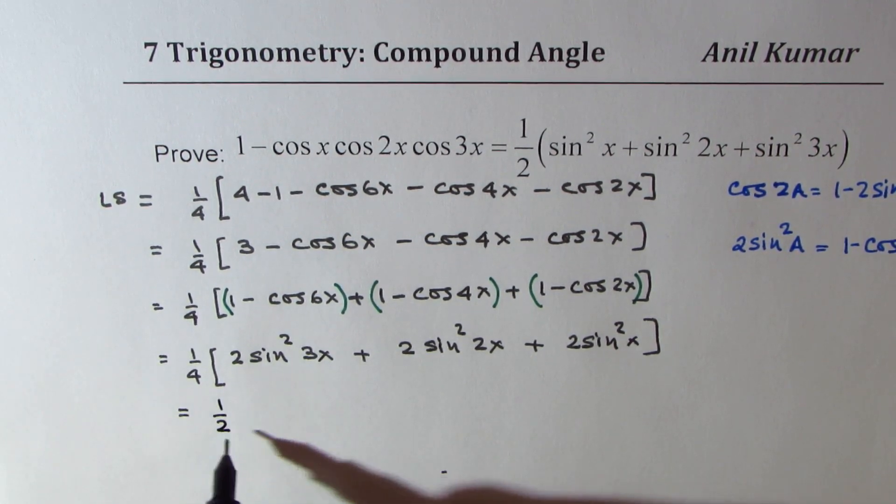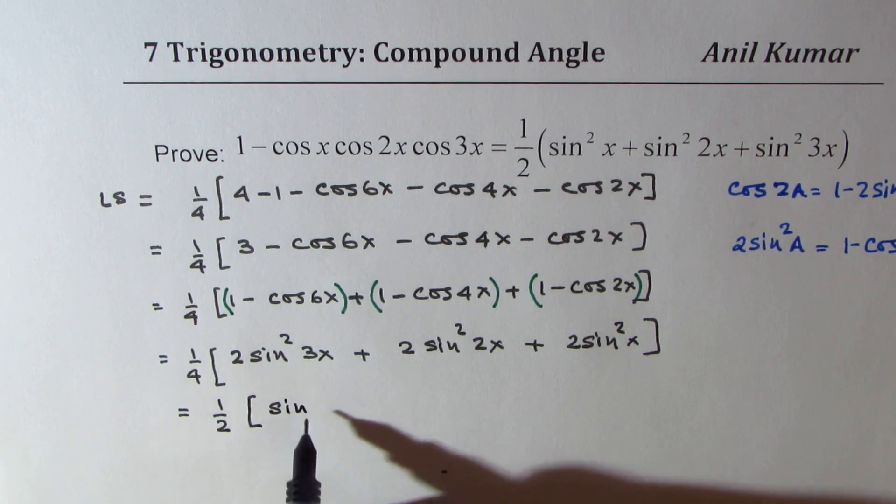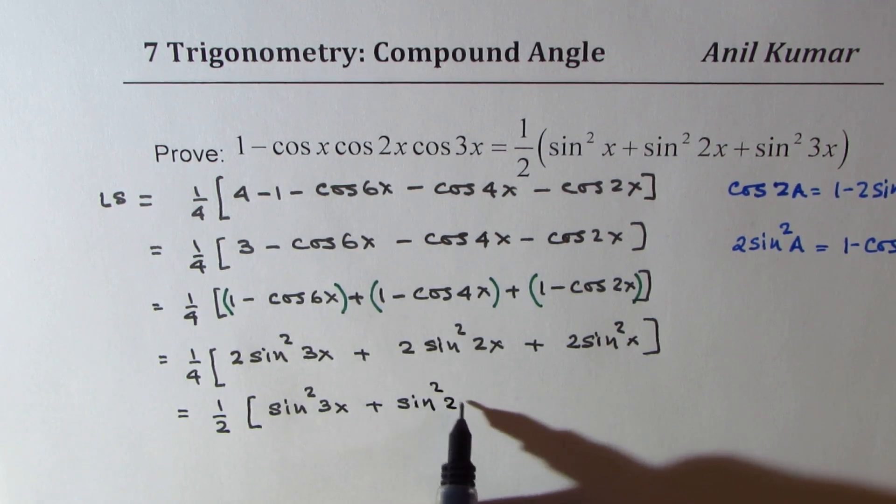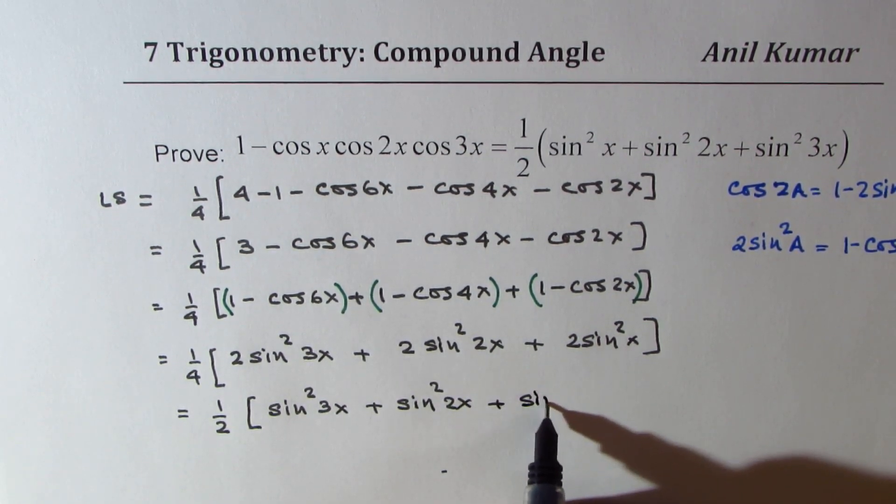So, we get half of sine square 3x plus sine square 2x plus sine square x.